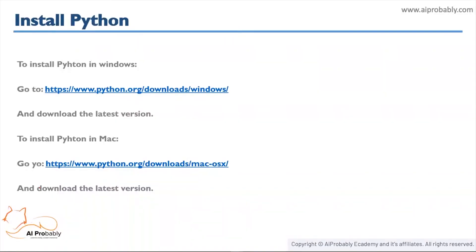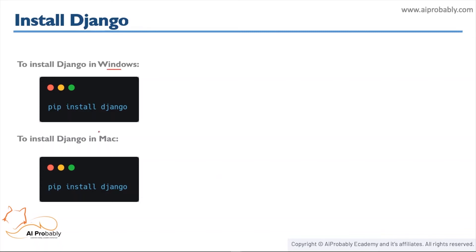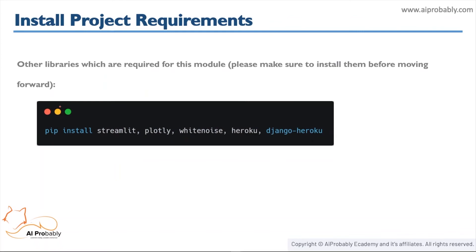The setup requires three steps. First, install Python — since Django is a Python web framework, you need Python on your machine. On Windows or Mac, download and run the Python installer from the respective links. Second, install Django using the command 'pip install Django', which is the same for both Windows and Mac. Third, install additional libraries used throughout this course: Streamlit, Plotly, WhiteNoise, Heroku, Django-Heroku, and data science libraries like scikit-learn for importing machine learning models.